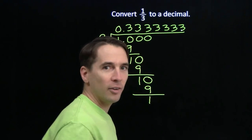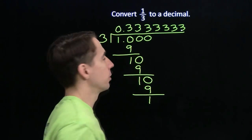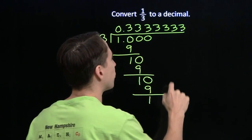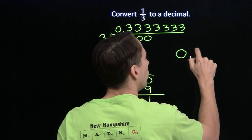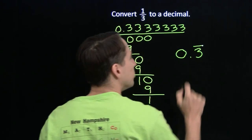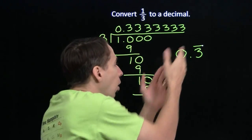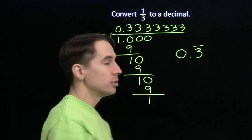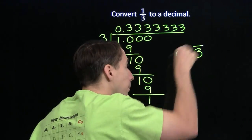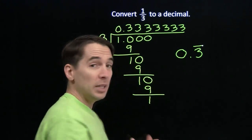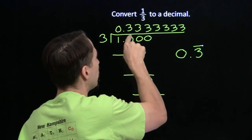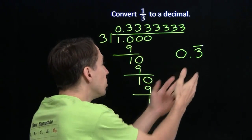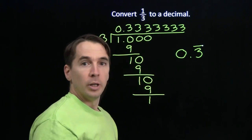I don't want to write 3s forever, and you don't want to watch me write 3s forever. So we're going to have a special notation — it just means do this forever. Instead of writing 3s forever, I'm going to put 0.3 and just put a bar over the 3. All that bar means is keep writing this over and over and over again forever. So 0.3 with the bar over it — that's 3 repeating. That doesn't mean 3 tenths; that means 0.333333 on and on and on forever.